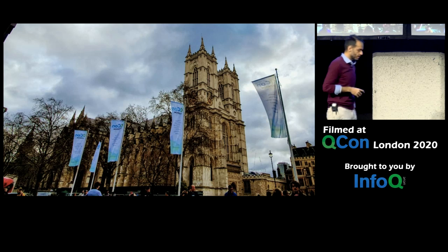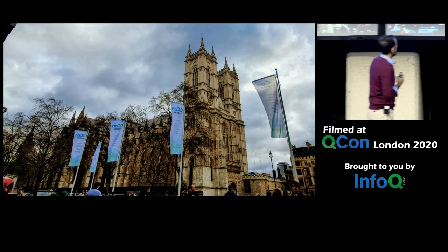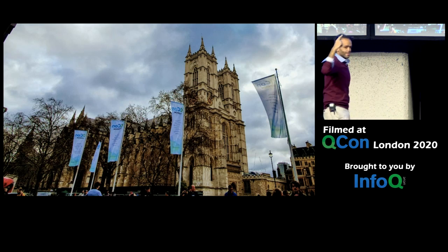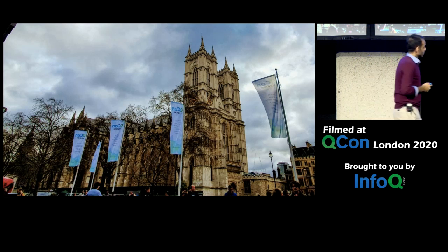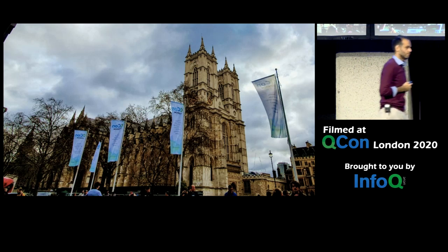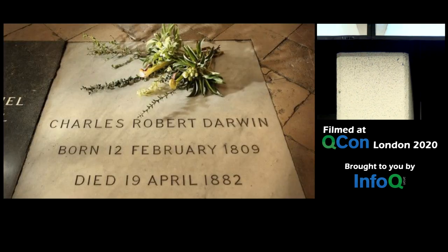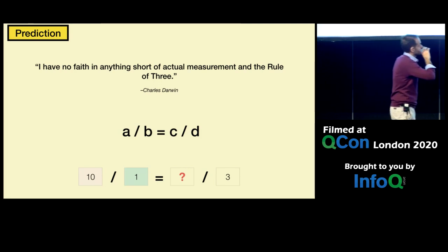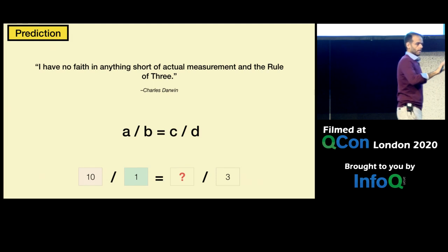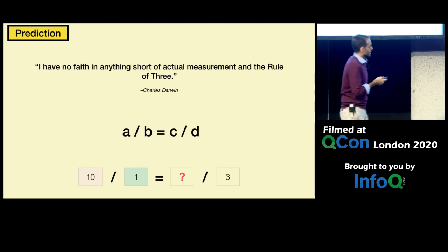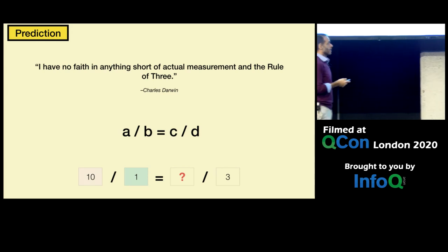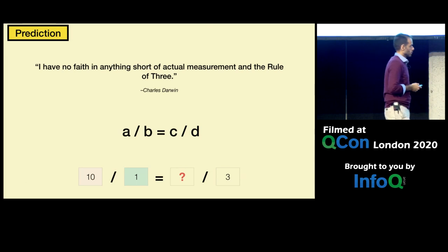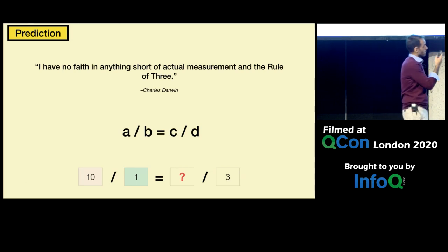If you step out of this building today, you're faced with Westminster Abbey. Charles Darwin rests there. He said: 'I have no faith in anything except actual measurement and the rule of three.' The rule of three is the idea that if A/B = C/D, and you know any three values, you can find the fourth. That's a little bit of what we did with the ice cream example — we were able to solve it with a data set that mapped that relationship.